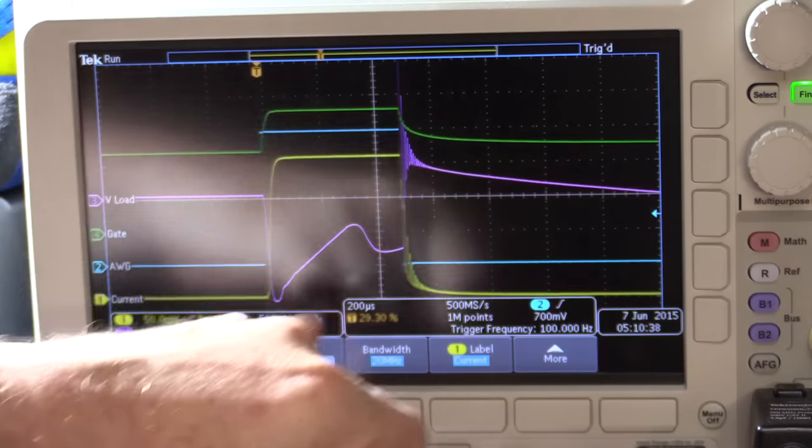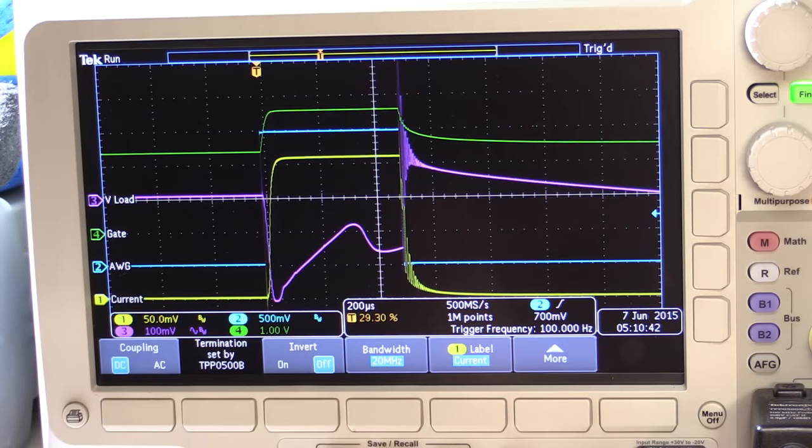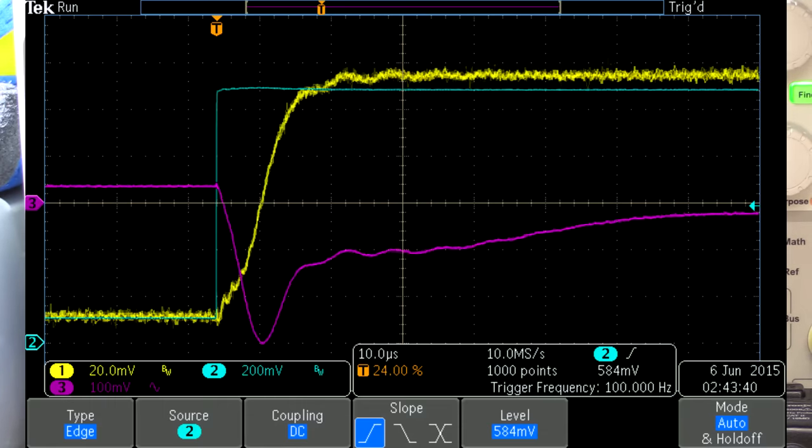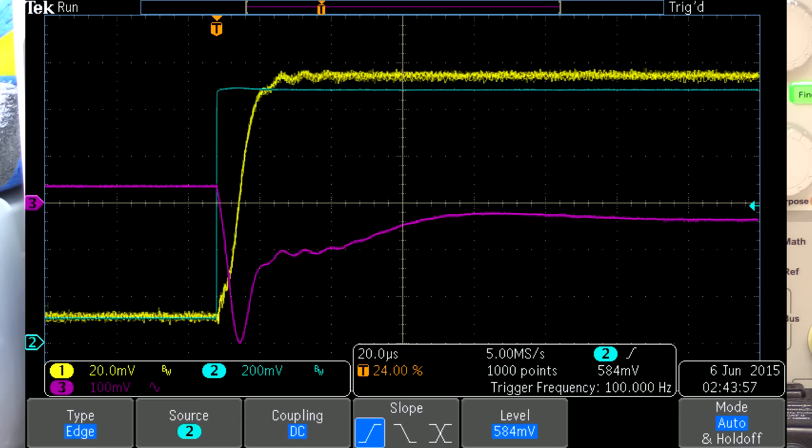But we've still got this ringing and things on the sides here. Now, in order to improve things, if I now turn this off and put the TLE in, you'll see the difference in this. I'm just going to take a snapshot of this so that I can include a good quality picture in the video output. So all I have to do to save images to the memory stick is hit the save button. So I'm just going to switch this back now to the TLE, and you'll see the difference in the waveforms.